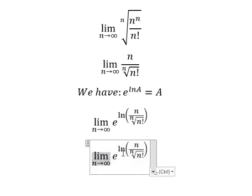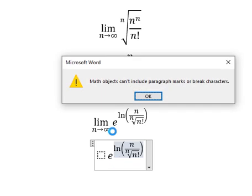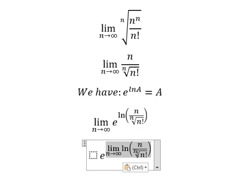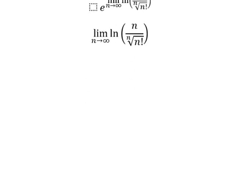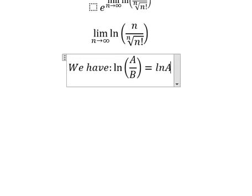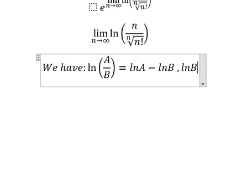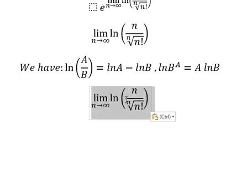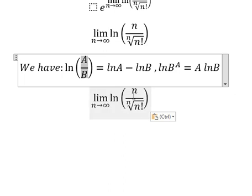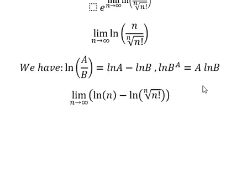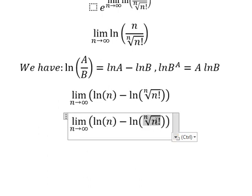Next, I will put the limit here. We need to focus on this expression, and we have the formula here. This gives us A over B, which is this expression here. Now we need to transform this one into that form, and we can put it like this.